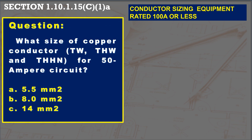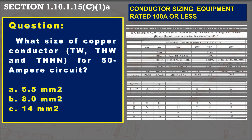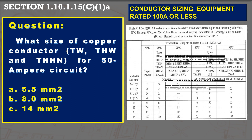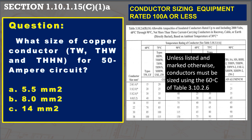In complying with the equipment terminal rating, what size of copper conductor — TW, THW, and THHN — for a 50-ampere circuit? Options are A: 5.5 squared millimeters, B: 8 squared millimeters, and C: 14 squared millimeters. Unless listed and marked otherwise, conductors must be sized using the 60 degrees Celsius column of Table 3.10.2.6. Therefore, 14 squared millimeters is the answer, whether it is TW, THW, or THHN.